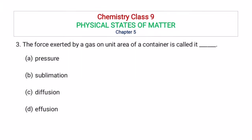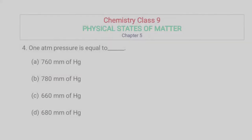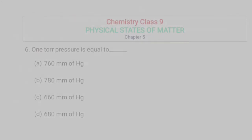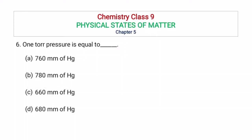MCQ: The force exerted by a gas on unit area of a container is called — pressure, sublimation, diffusion, or effusion? The correct option is pressure. 1 atm pressure is equal to — 760 mm of mercury, 780 mm of mercury, or 680 mm of mercury? The correct option is 760 mm of mercury. 1 atm pressure is equal to — 760 torr, 780 torr, 860 torr, or 880 torr? The correct option is 760 torr.